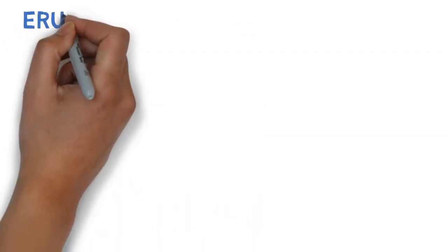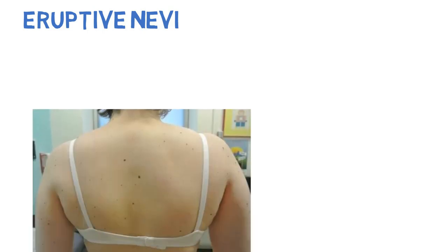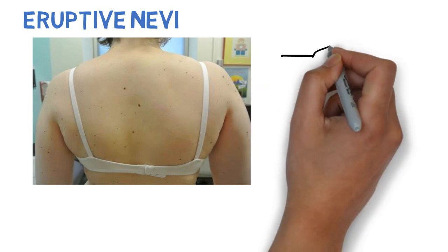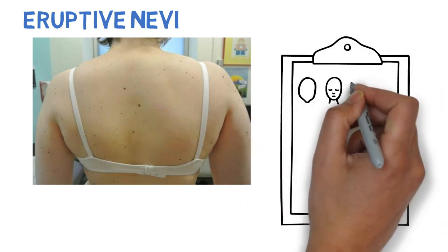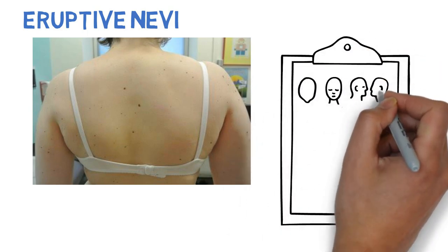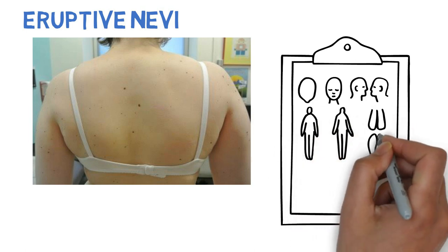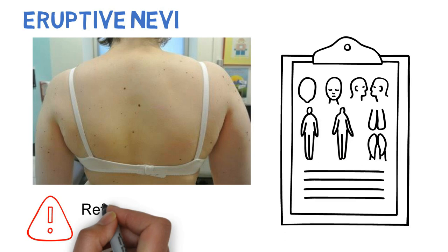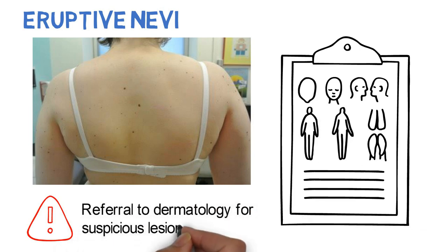Patients may also present with eruptive nevi, which is a sudden onset of pigmented lesions on the skin. Therefore, it's important that the patient's healthcare provider conduct a full-body skin exam prior to starting targeted therapy. Lesions should be monitored and any changes should be documented. Referral to dermatology may be needed for suspicious lesions.